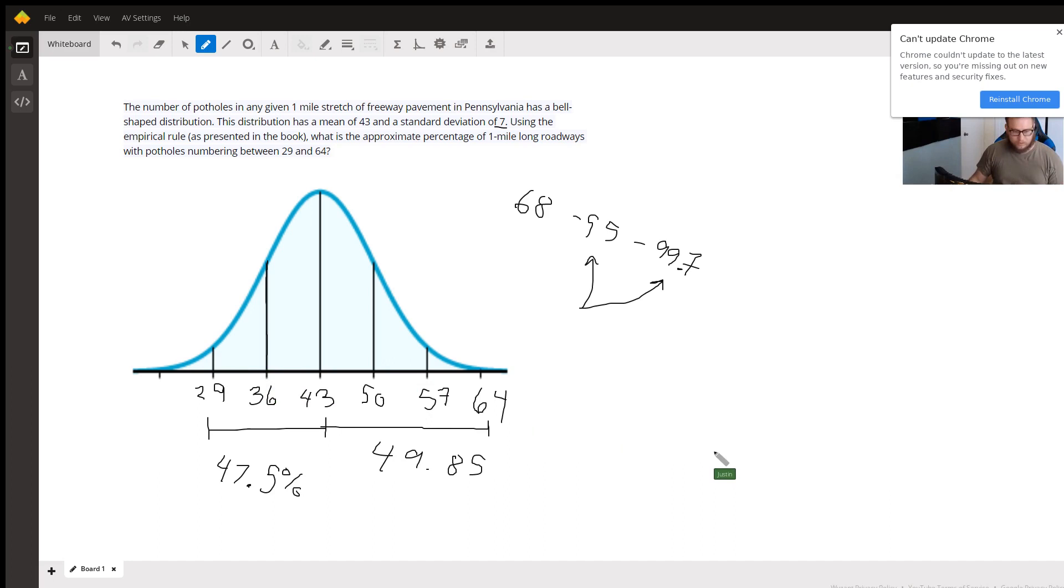which means the total percentage of all roads containing between 29 potholes and 64 potholes will just be the sum of these two percentages here, which I calculated at 97.35%.